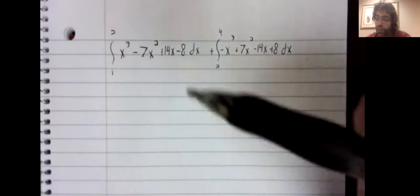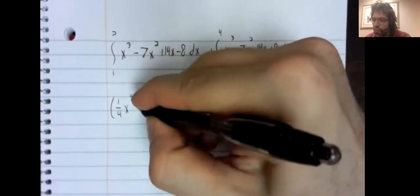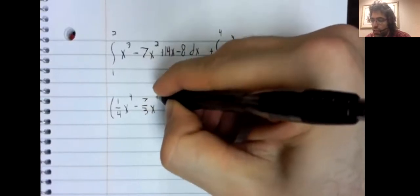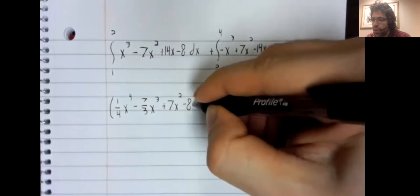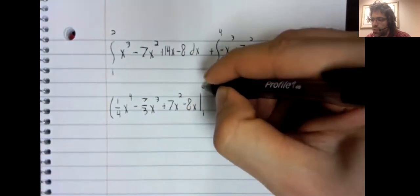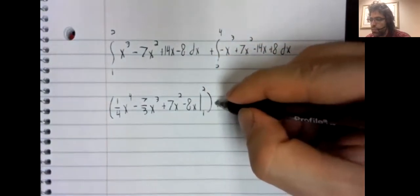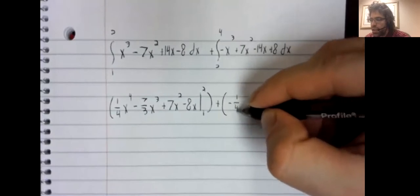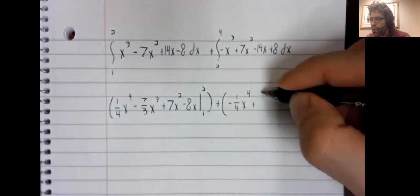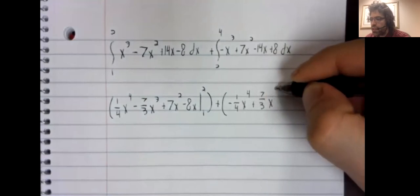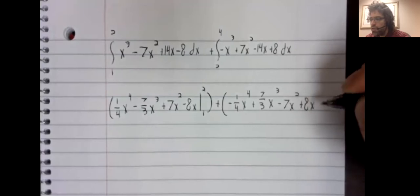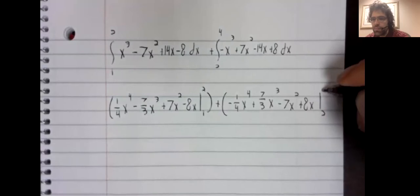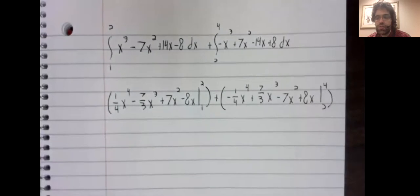The antiderivative of this: one fourth x to the fourth minus 7 thirds x cubed plus 7x squared minus 8x, from 1 to 2. The antiderivative of this: negative x to the fourth plus 7 thirds x cubed minus 7x squared plus 8x from two to four.